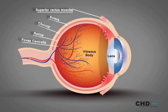In the middle of the retina is a tiny dimple known as the fovea, or fovea centralis. It is the center of the eye's sharpest vision and the location of most color perception.